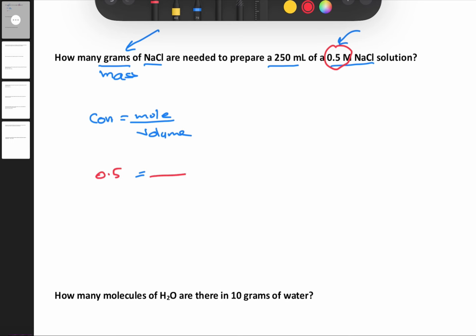The moles are not known yet. The volume here is given in milliliters, so we have to change them to liters. To change milliliters to liters, divide by 1000. We divide 250 over 1000 to get 0.25 liters. The moles are equal to 0.25 mole.